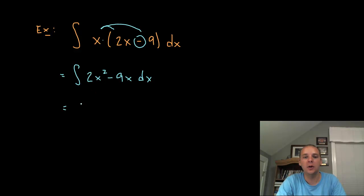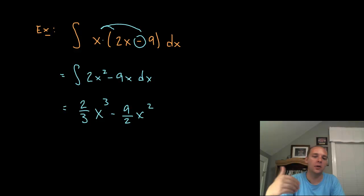The integral of 2x² would be 2/3 x³—you increase the exponent by 1, divide by that same quantity. Minus, the integral of 9x would be 9x²/2, so we have minus 9x²/2, and then plus C, obviously.